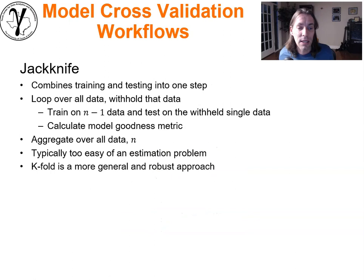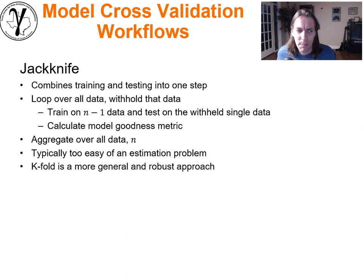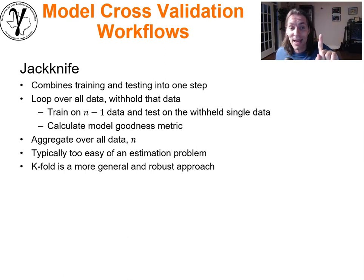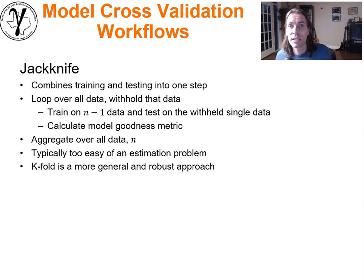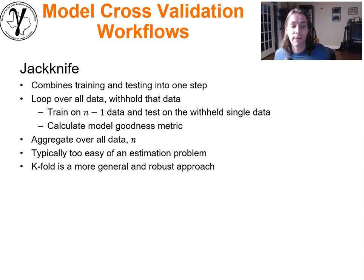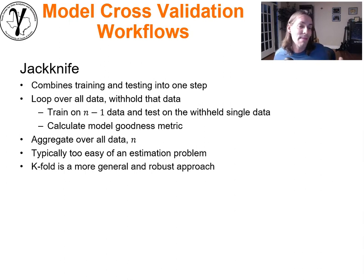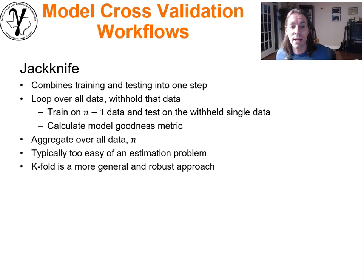The jackknife approach is another approach and it's a bit old-fashioned. It combines training and testing into one step. In fact, we could see it as a specific case of k-fold cross-validation. You loop over all the data, you withhold that one data value, you train on n-1 data through the entire workflow, and then you test on that withheld single data value. You calculate the model goodness metric and aggregate that over all of the data. Typically, that can be seen as too easy of an estimation problem — you have n-1 training data available to you, so it's not very challenging to make that prediction at that one data location.